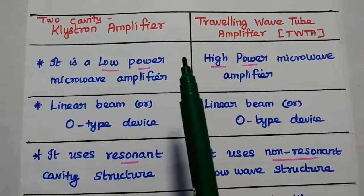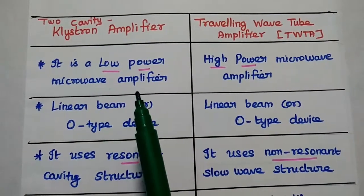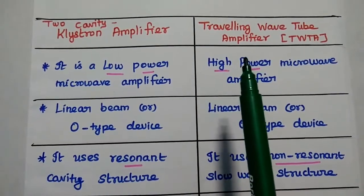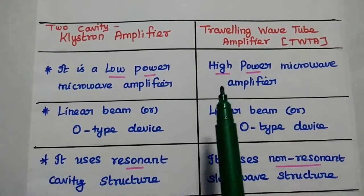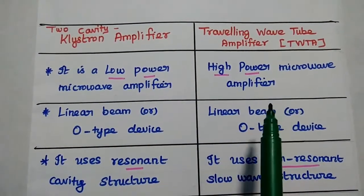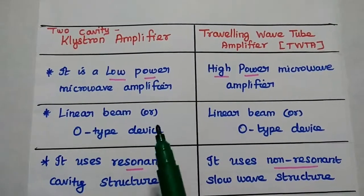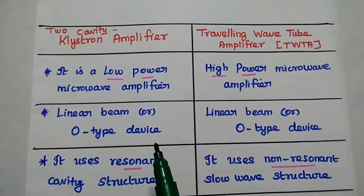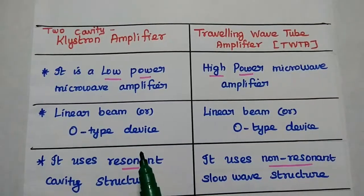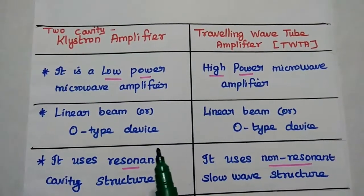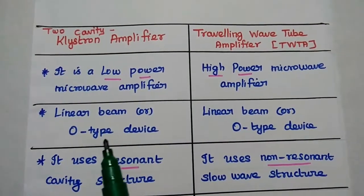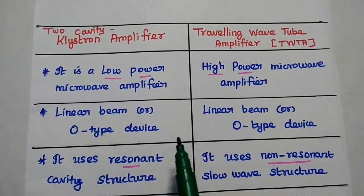Two cavity klystron amplifier is a low power microwave amplifier. Travelling wave tube amplifier is a high power microwave amplifier. Both are linear beam devices, that means the electron beam is travelling in a straight line in the device. It is also called as O type device.